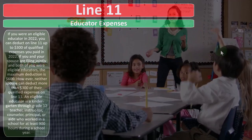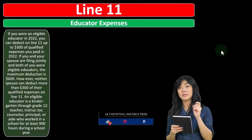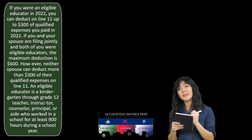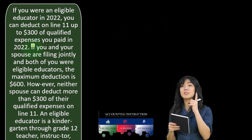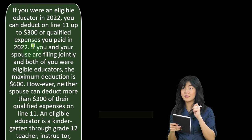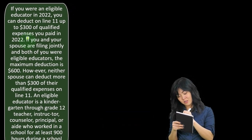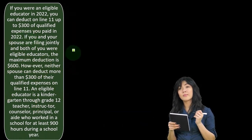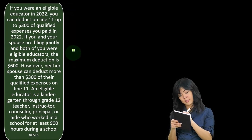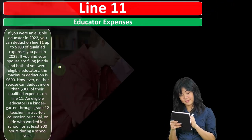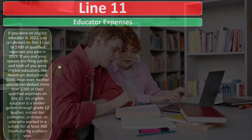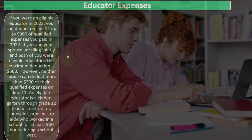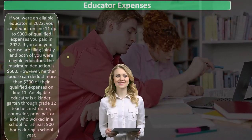So line 11, educator expenses: if you were an eligible educator in 2022, you can deduct on line 11 up to $300 of qualified expenses you paid in 2022. The dollar amount is relatively low and hasn't changed too much over time because it hasn't had an automatic increase with inflation. If you and your spouse are filing jointly and both of you were eligible educators, the maximum deduction is $600 — which makes sense, you've got two teachers. However, neither spouse can deduct more than $300 of their qualified expenses on line 11.